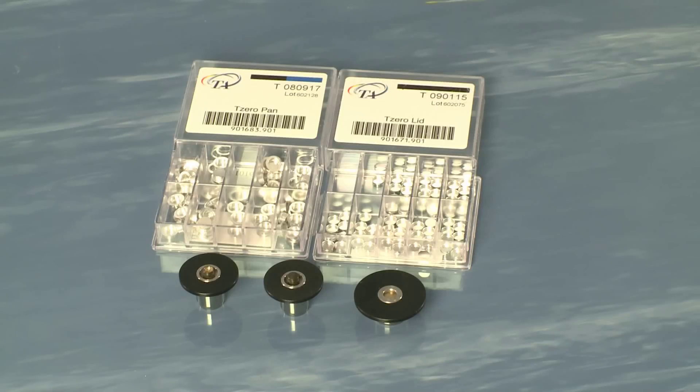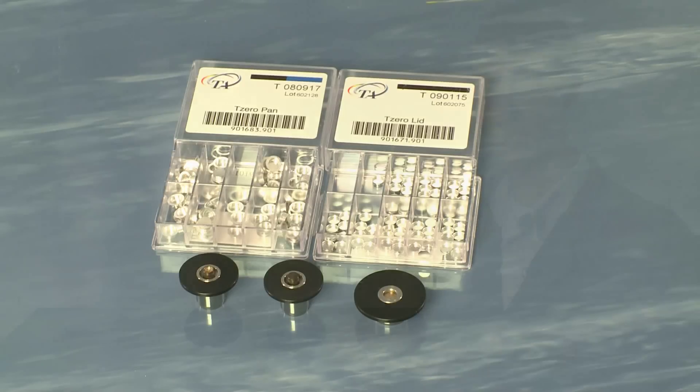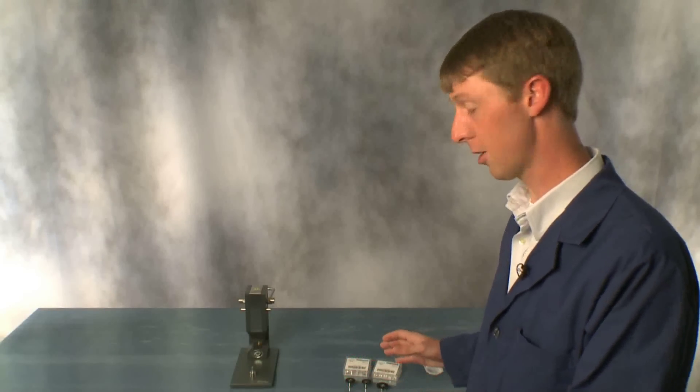There are two upper dies for the crimped pans. There's a flat die set which is used for powders and films, and a second hemispherical die that is used for more chunk type samples. I'm going to show you how to prepare a chunk sample.